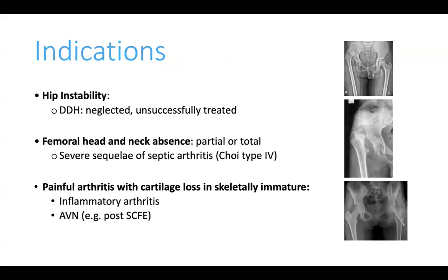The indications for this procedure include situations where the hip is unstable and unreconstructable — for example, very late-presenting DDH in an adolescent, or where the femoral head and neck has been completely destroyed by infection or post-septic loss, end-stage arthritis with complete loss of cartilage such as in inflammatory arthritis, or cases where the femoral head has collapsed due to AVN following SCFE.